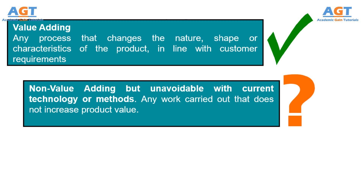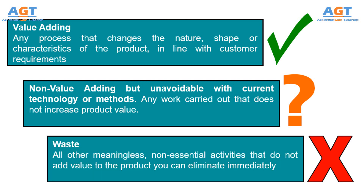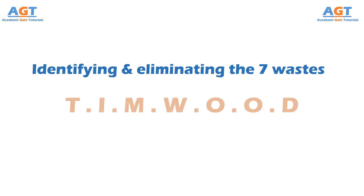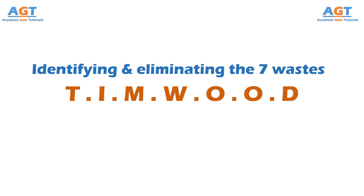Today, we are going to learn about the wastes, which are all other meaningless and non-essential activities that do not add any value to the product and need to be eliminated immediately. To remember the seven wastes of lean manufacturing easily, we can use the shortcut T-I-M-W-O-O-D.